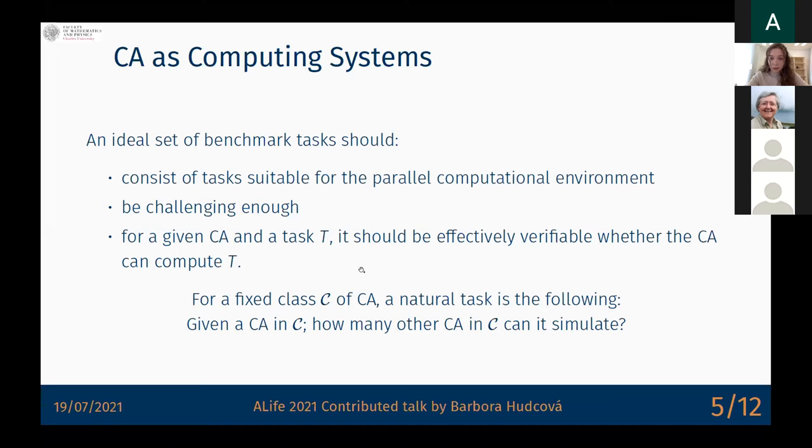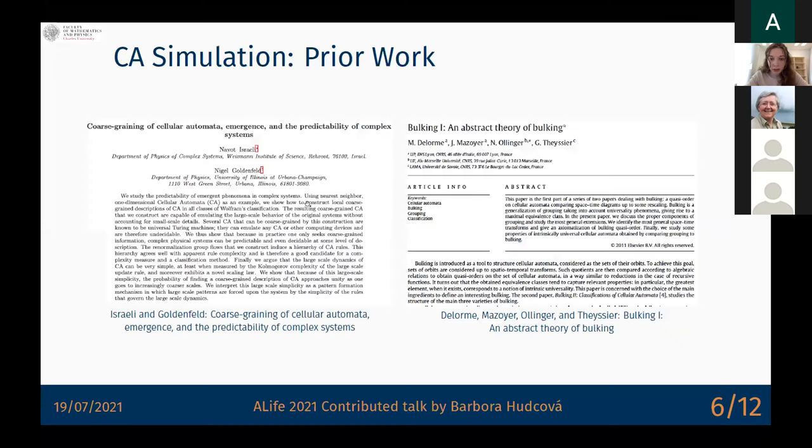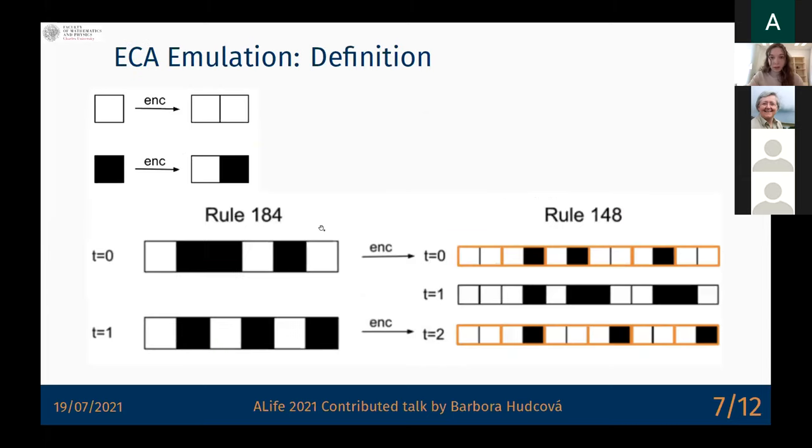I would like to mention these two important prior works: one by Israeli and Goldenfeld, who have introduced the notion of simulation being the CA coarse-grainings, getting inspired by the physical notion of renormalization, and somehow a dual notion to this is a bulking of cellular automata introduced by these four authors. If you're interested in these notions which also have very cool mathematical interpretations, I really recommend reading these papers.